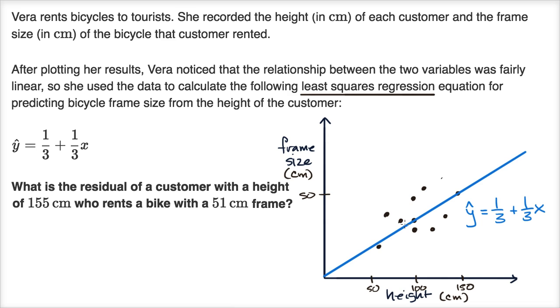And so this, you could view this as a way of predicting, or either modeling the relationship, or predicting that if I get a new person, I could take their height and put it as an x, and figure out what frame size they're likely to rent.